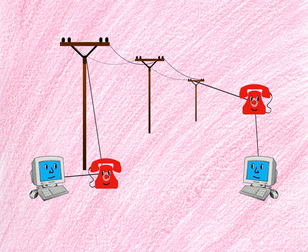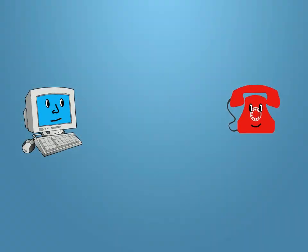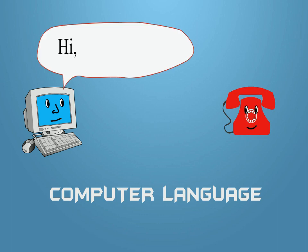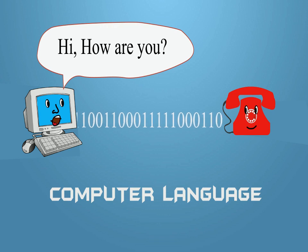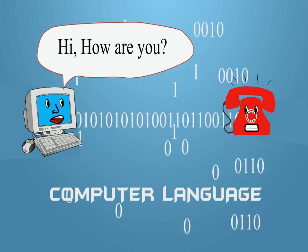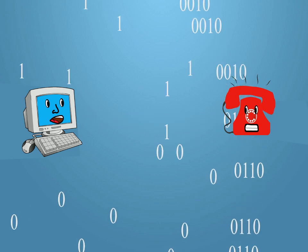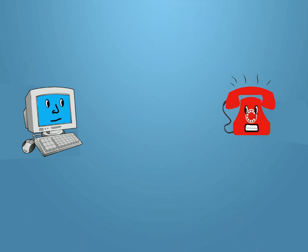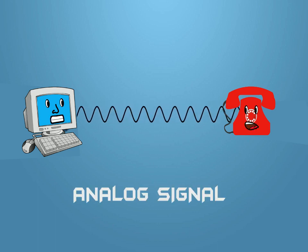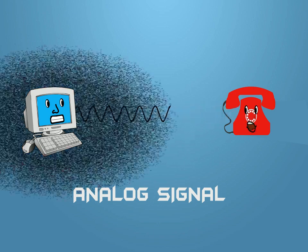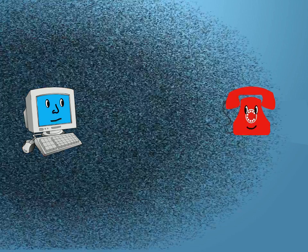But there is a problem in this continuity of the serial connection. Once we have typed a message saying 'hi, how are you,' the computer will convert and send the message in the form of zeros and ones, which is the only language the computer knows — the binary language. But the telephone cannot understand binary language because it sends and receives messages only through analog signals, and those analog signals cannot be understood by the computer.